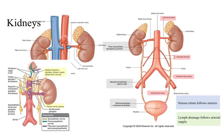Regarding blood supply, with the left kidney, the renal vein heads out of the kidney and goes underneath or posterior to the superior mesenteric artery — so the superior mesenteric artery folds over the left renal vein. Also notice that the renal artery is posterior to the renal vein. So if you're looking at a cadaver or doing surgery, the renal artery will always be behind the renal vein, and this is also the case on the right side. Venous return follows arteries, and lymph drainage also follows arterial supply.